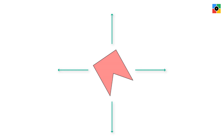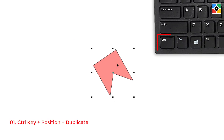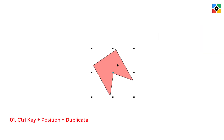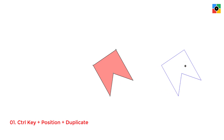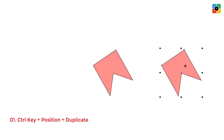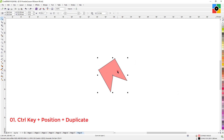Most of the time you need to make a duplicate object in a perfect horizontal or vertical position. To make a duplicate object in a perfect horizontal position: select the object, press and hold the Ctrl key, move the object left or right, click and hold the right mouse button, leave the left mouse button first, then leave the right mouse button, and finally leave the Ctrl key. This creates a duplicate object in a perfect horizontal position. The same way you can make a duplicate object in a perfect vertical position.